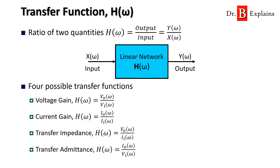What is the transfer function? A transfer function is a ratio of two quantities of a linear network — usually the output over the input, Y divided by X. We can have four different transfer functions: voltage gain (V-out over V-in), current gain (I-out over I-in), transfer impedance (output voltage divided by input current), and transfer admittance (output current divided by input voltage). In this video we're going to give one example of how to get a transfer function, focusing on the voltage gain.